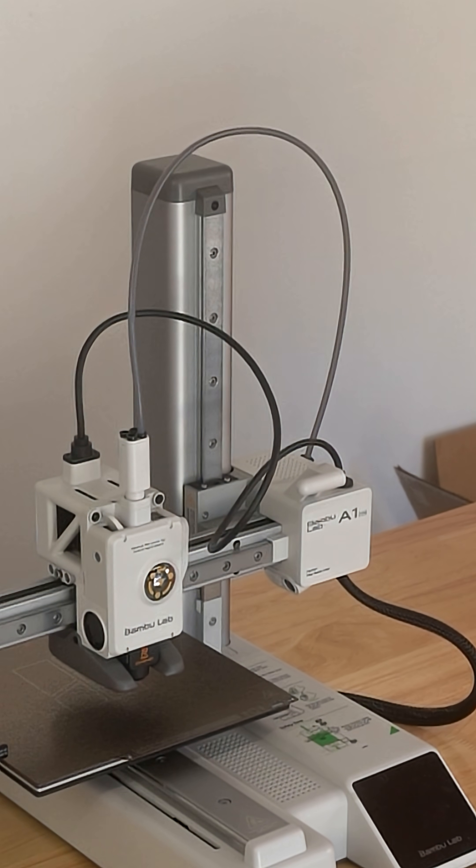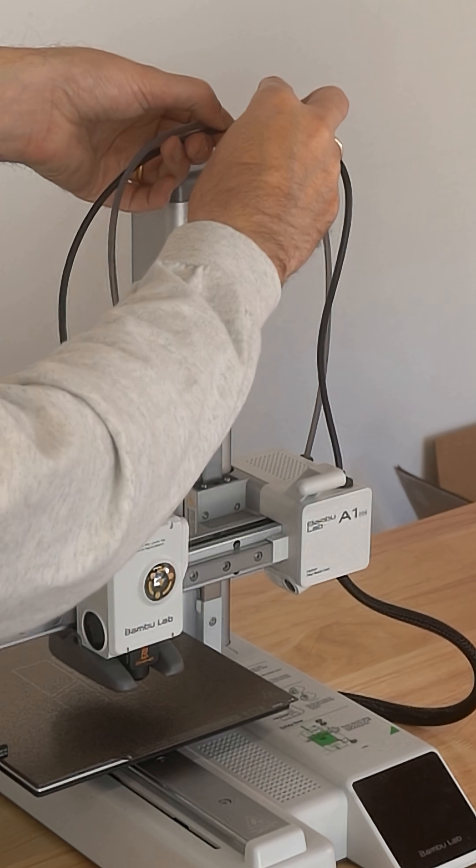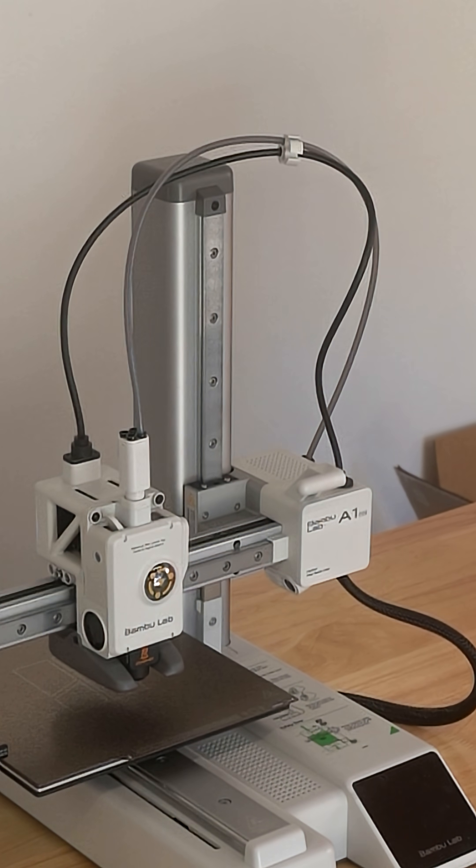Next, go ahead and find this part right here. We'll use this to connect the power cable with the bowden tube, just to make sure everything is nice and neat.